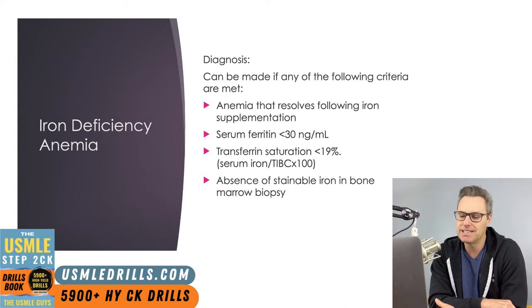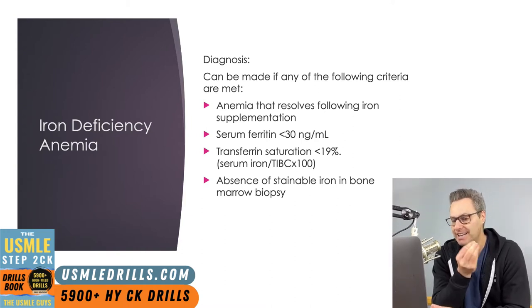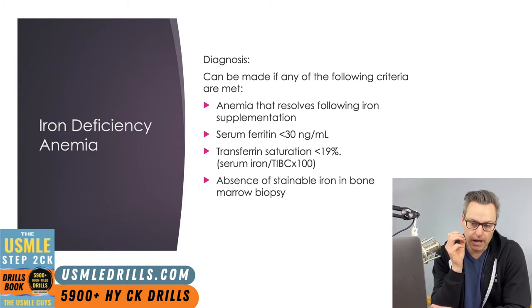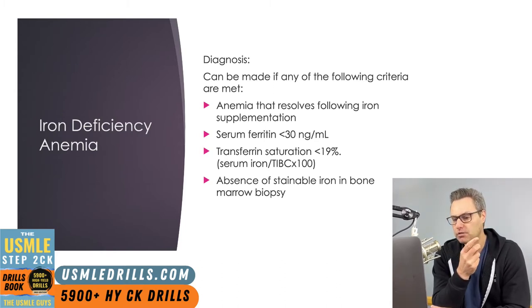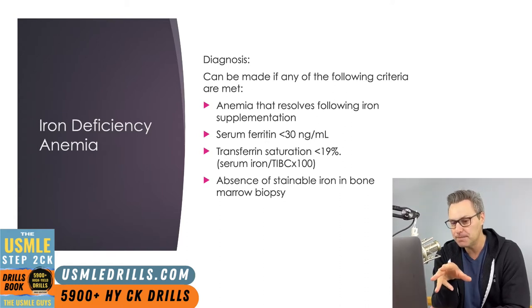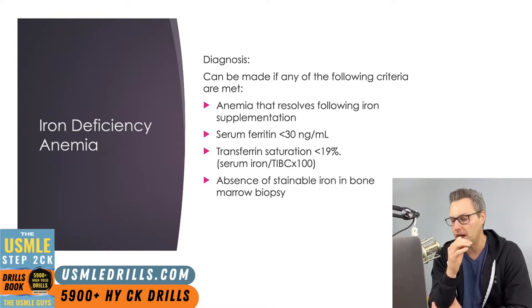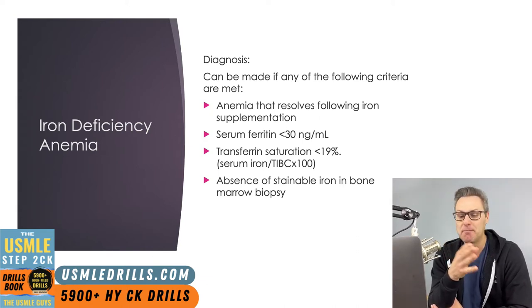A diagnosis of iron deficiency anemia is made when any of the following criteria are met: a patient with known anemia that resolves with iron supplementation; serum ferritin below 30 nanograms per milliliter; or transferrin saturation — calculated by dividing serum iron by TIBC and multiplying by 100 — if that percentage is less than 19, this indicates iron deficiency anemia. The gold standard is technically an absence of stainable iron on bone marrow biopsy, but iron deficiency anemia is absolutely not an indication to get a bone marrow biopsy.